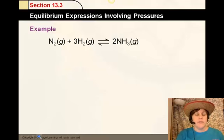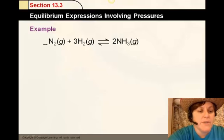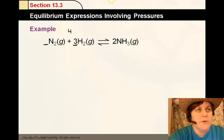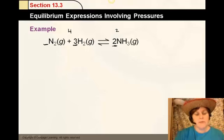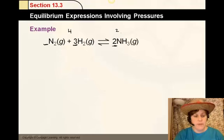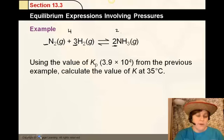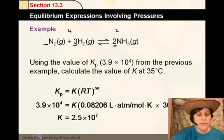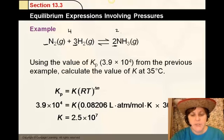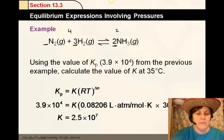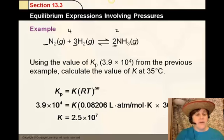Notice here for delta N, products minus reactants, you have to add up the coefficients. The reactants would have 4 as the number of moles of reactants, and 2 as the number of moles of products. Using the value of Kp, which we got earlier, 3.9 times 10 to the 4, we're going to calculate the value of K at 35 degrees Celsius. There's the Kp we have. We're going to solve for K. Plug in R and T, and you notice the delta N is 2 minus 4. The number of products minus the number of reactants that are gases. If sometimes you have reactants or products that are not gases, you don't count those number of moles. In this case, it's going to be a negative exponent. When you solve for K, you get 2.5 times 10 to the 7th power.